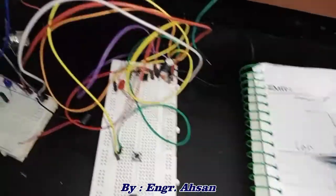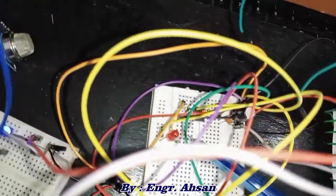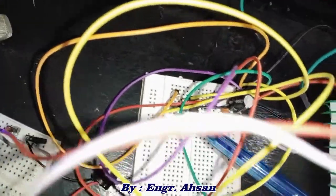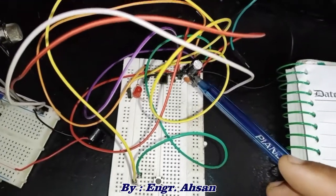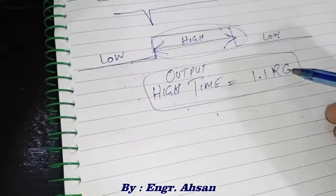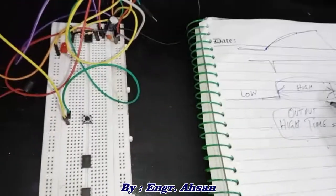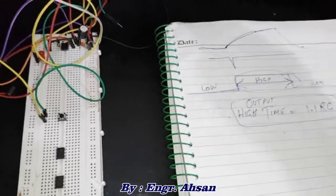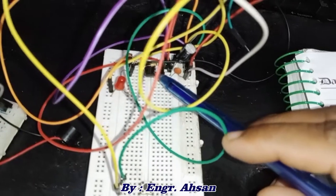What is this R and C? Basically here is one resistor connected right over here, and one is this capacitor. So the value of resistor and capacitor basically decides how much time it remains on. This is called monostable mode of 555 timer.